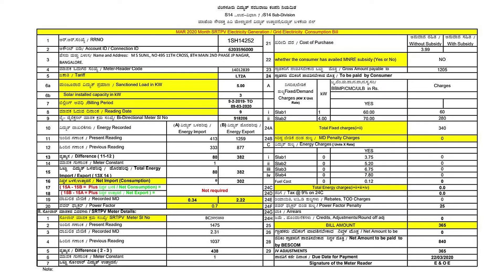This is a typical net metering bill given by the DISCOM — specifically for a consumer in Bangalore for the period of March 2020. The consumer has a sanction load of 5 kilowatt and has installed a 3 kilowatt solar system. In most DISCOMs, you are allowed to install solar up to or less than your sanction load. This is a monthly bill, and we will now look at the different aspects of it.